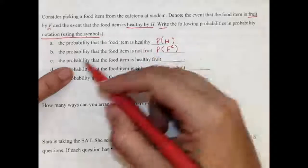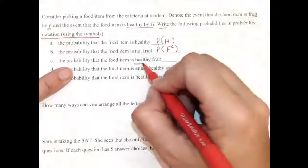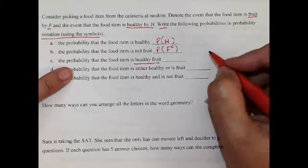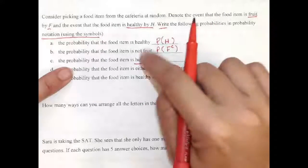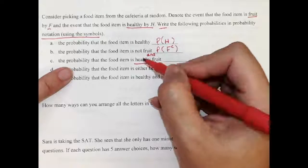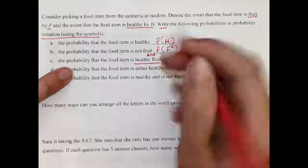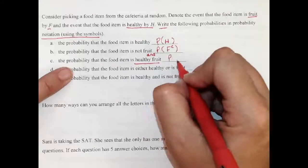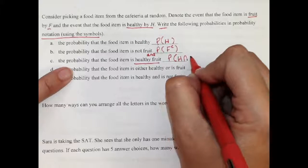The probability that it's healthy fruit. Now this is a weird thing with English. This actually means healthy and fruit. So you do have to realize that it's saying it wants to be healthy and a fruit at the same time. So the probability that it's healthy and a fruit.